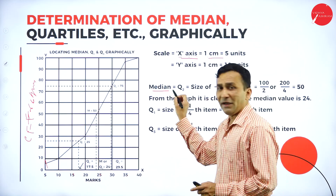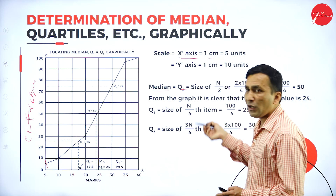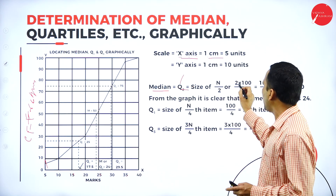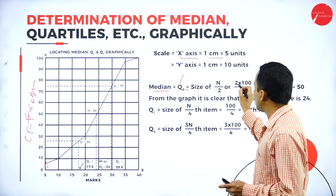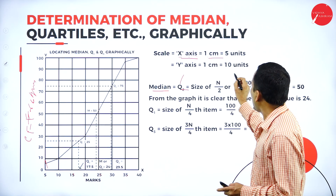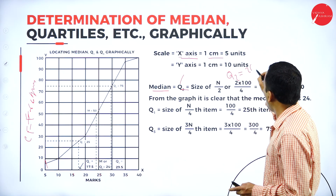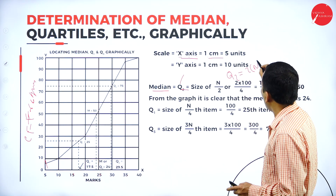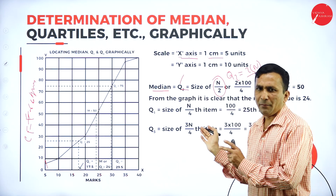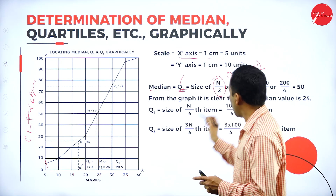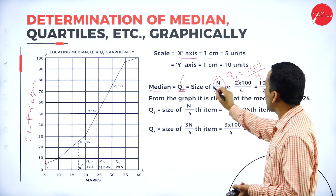Whatever information is given in this question, I have written it in this format. Mark less than 5 — why have I written less than 5? Because we are trying to do a less-than cumulative curve. So I have written: less than 5, less than 10, less than 15, less than 20, less than 25, less than 30, less than 35, less than 40. That means it is the upper limit; the lower limit means it will start from 0 to 5, then 5 to 10, 10 to 15, 15 to 20 — the sequence is going like this.